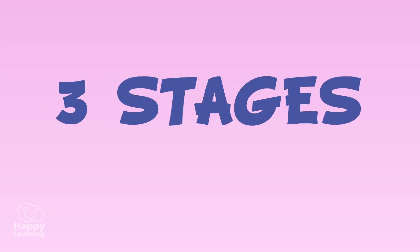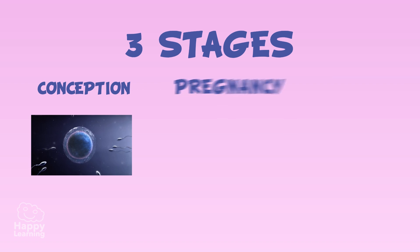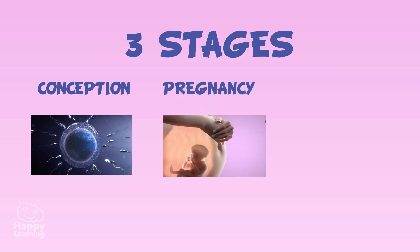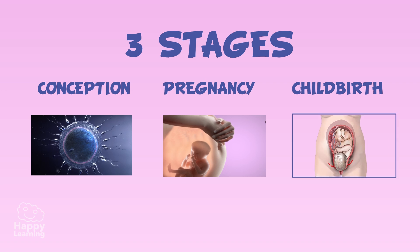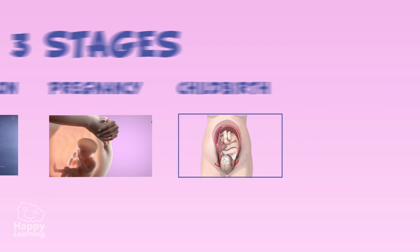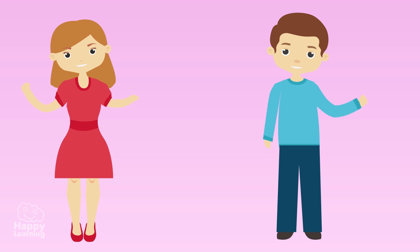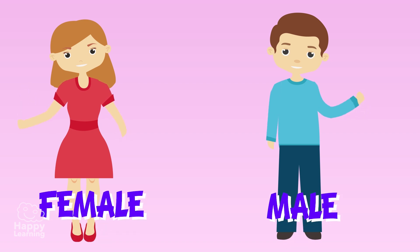Reproduction develops in three stages: conception, pregnancy, and childbirth. And for it to take place, both females and males need to intervene.